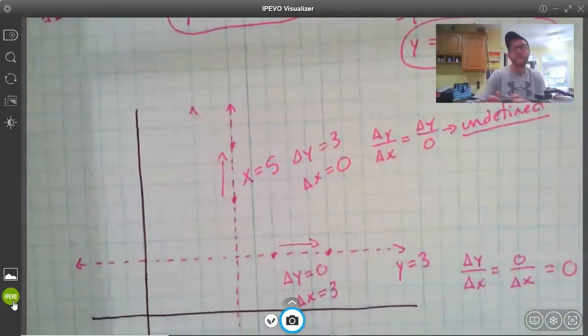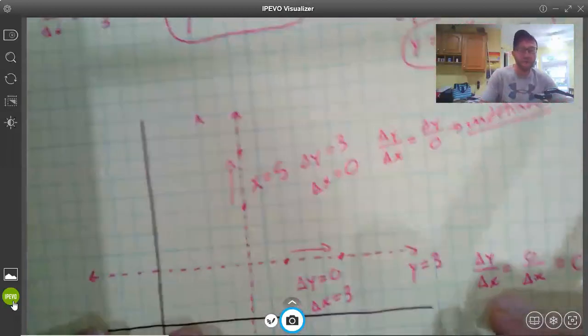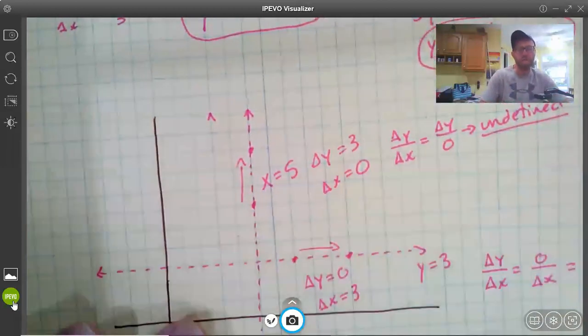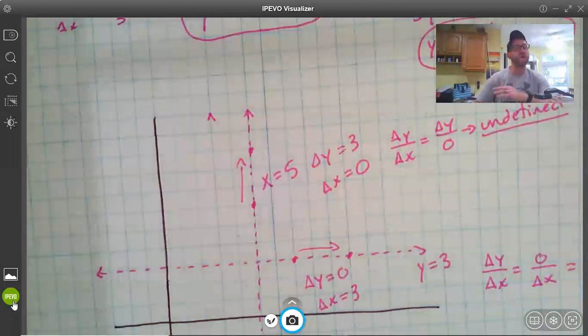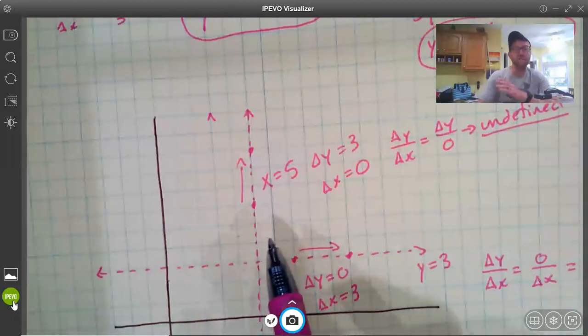So I can use that in equations, I can plug that into equations, it's an actual number. Here, however, if I'm dealing with a vertical line, its slope is undefined, or it just doesn't have a slope.